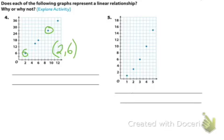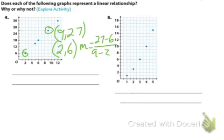And the last one would be, what is that, 9 and 27. Probably should have gone with a different point, but that's okay. So slope is 27 minus 6 over 9 minus 2. So that would be 21 over 7, M equals 3.